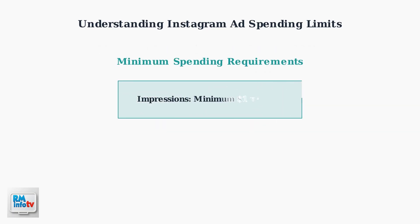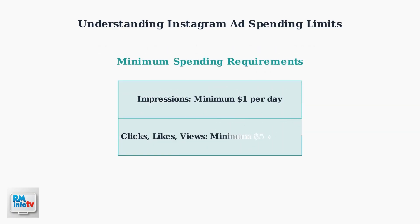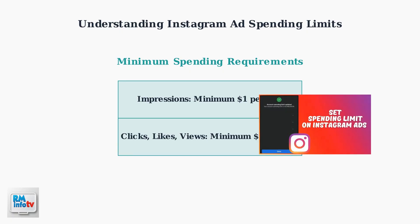Instagram has minimum spending requirements that vary by campaign objective. For impression-based campaigns, expect to spend at least one dollar per day. For engagement objectives like clicks, likes, or views, the minimum is typically five dollars per day. When you update your spending limits, you'll receive notifications confirming the changes, which helps you track your budget adjustments and maintain control over your advertising expenses.